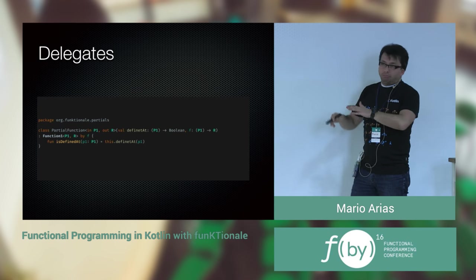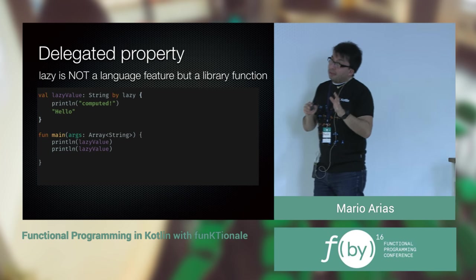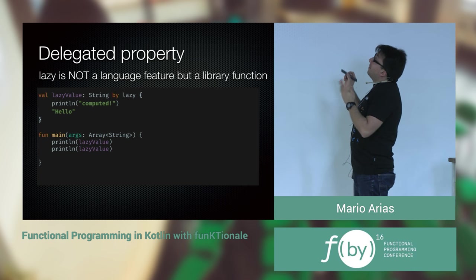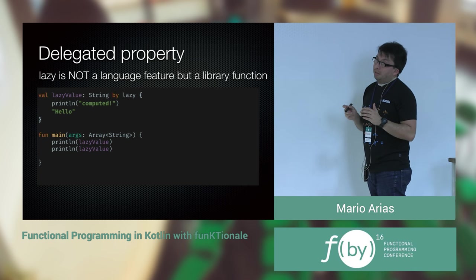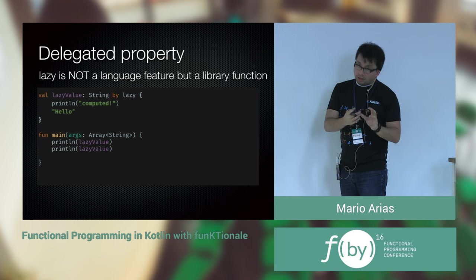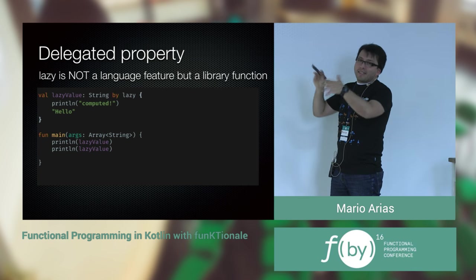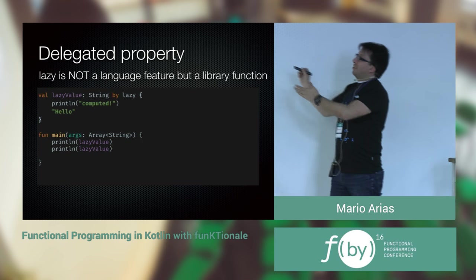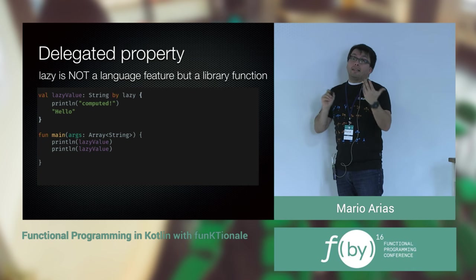It also works similarly for properties. Kotlin doesn't have a built-in `lazy` keyword — what we have is `lazy` defined in a library. It's just a function. We use `by`, and with that `by` it means: delegate the behavior of this property to this particular class. `lazy` returns an instance of a class with a special signature. But it's not a language feature — it's a library feature. That means you could create your own lazy implementations if you want.